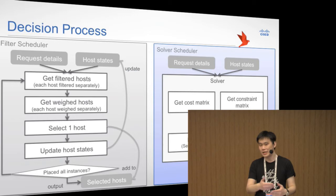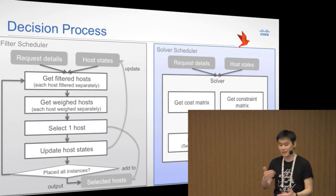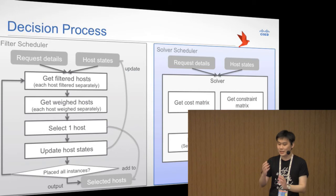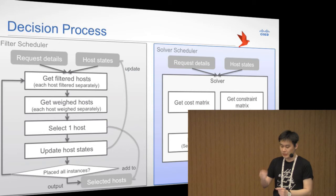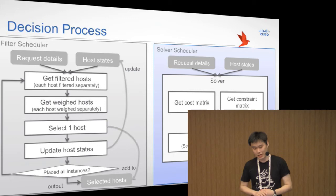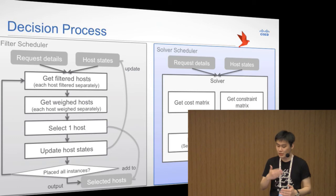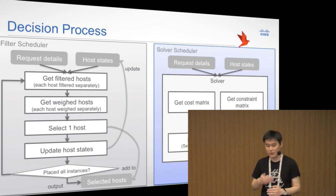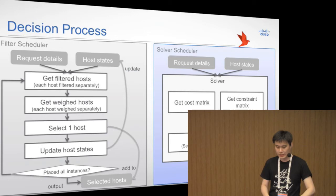In the filter scheduler, the filters are basically outputting a boolean value, like true or false. And the weigher will output a scalar value. However, in the solver scheduler, the constraint is a matrix. Basically, it indicates whether host I is able to place J number of requested VMs. And similar for the cost metrics. The cost metrics indicates how much cost it has to place J number of VMs in the host I.